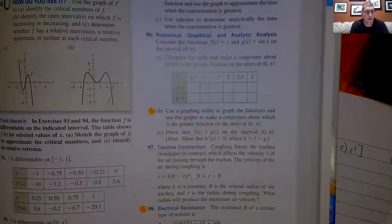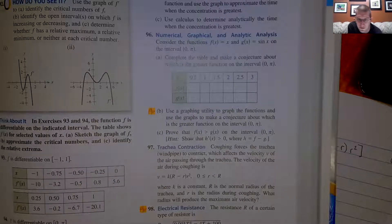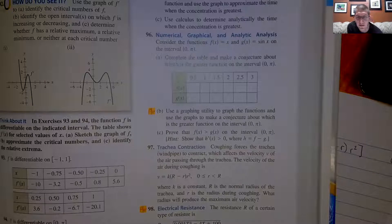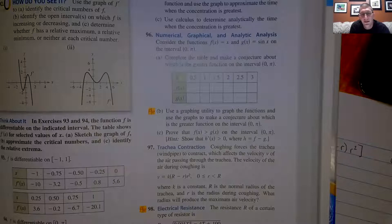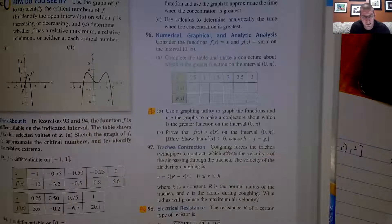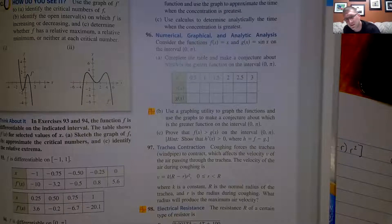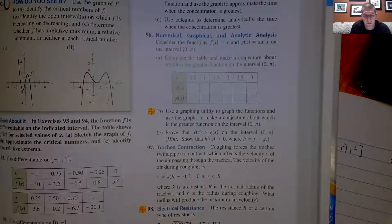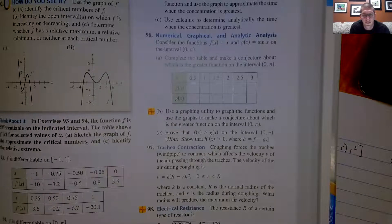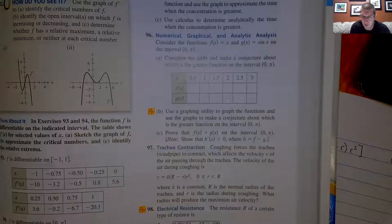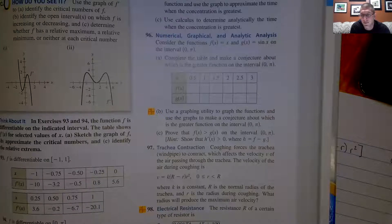So it says coughing forces the trachea or your windpipe to contract, which affects the velocity v of the air passing through the trachea. The velocity of the air is given. It's v equals k times capital R minus r times r squared, where r is greater than or equal to zero and less than capital R. It says k is a constant, capital R is the normal radius of the trachea, and lowercase r is the radius during coughing.